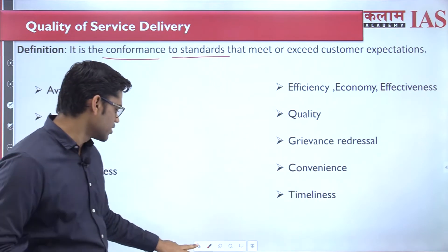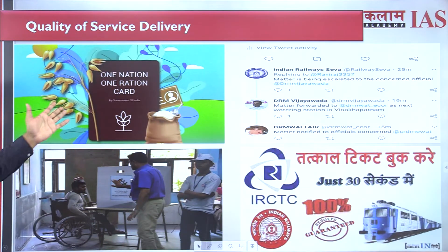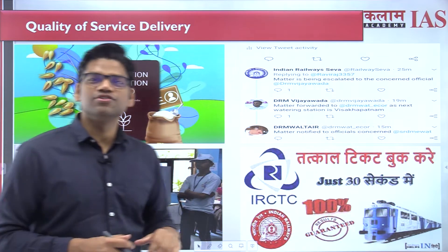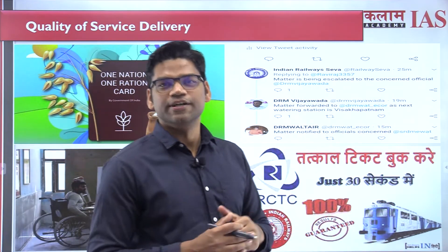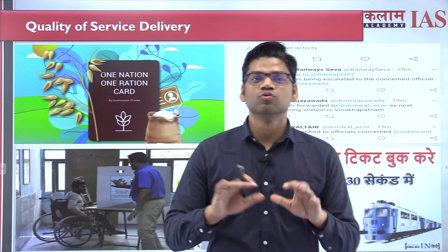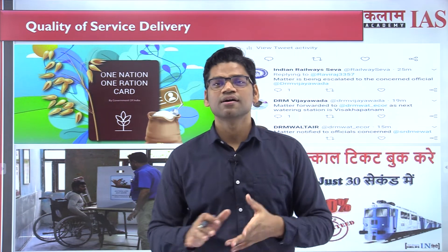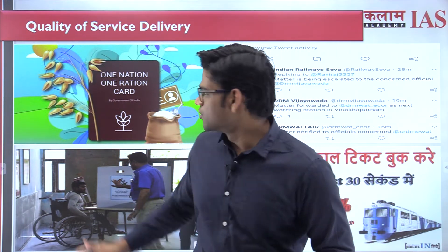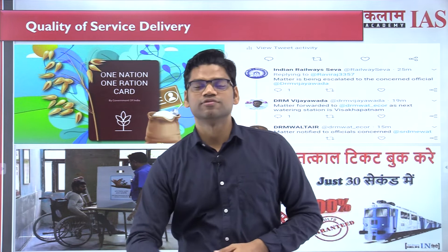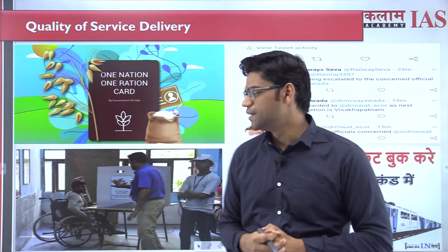One good example is One Nation One Ration Card. What does this show? It ensures availability — availability of the ration card throughout the nation to migrant labor. This enhances the quality of service delivery of the Public Distribution System (PDS).